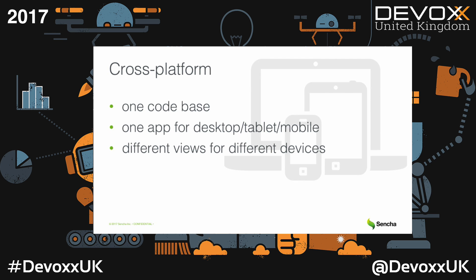Of course, you can have different views for different devices. I showed you a grid that works for tablets and desktops. But, for example, if you have the same application for phones, you would use a list instead of a grid because it's easier for phones. You can also have completely different builds for different devices. At runtime, the framework will detect the device and serve only the needed code for that device. Common techniques like responsive design are also supported.